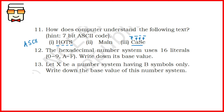Question 12: the hexadecimal number system uses 16 literals — write down its base value. It's very simple: the number of literals equals the base value, so the base value is 16. Question 13: let X be a number system having B symbols only — write down the base value. Just as stated, the number of symbols equals the base value, so the base value of number system X is B.